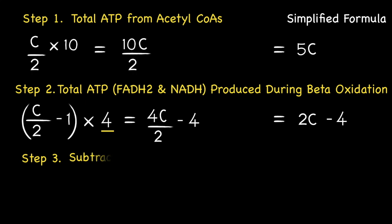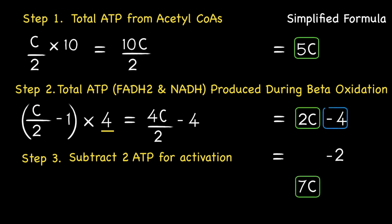Finally, we have to subtract 2 ATPs for fatty acid activation. If you want to know why it's 2 ATPs as opposed to just the 1, then please refer to my video titled fatty acid transport. We are now ready to add up similar values from each of these 3 steps. 5C plus 2C gives 7C. While adding up the negative values gives us minus 6. So, the expression 7C minus 6 gives the total yield of ATP from the beta-oxidation of even-numbered saturated fatty acids.